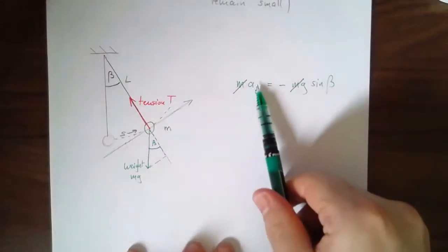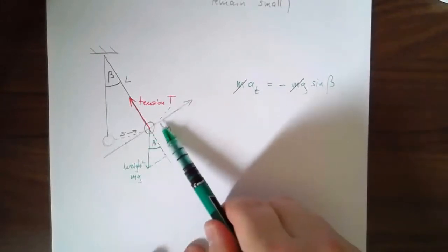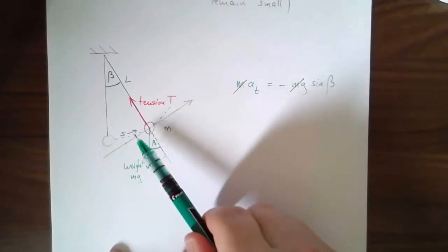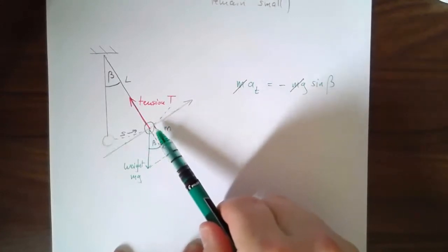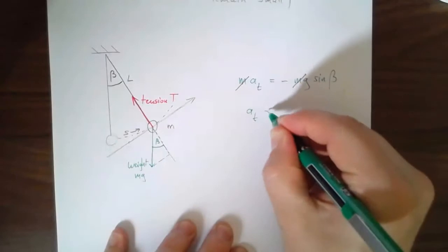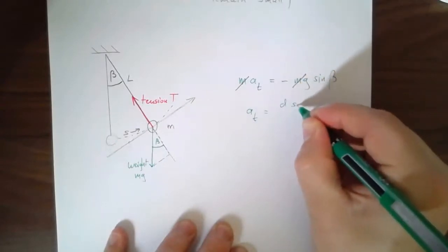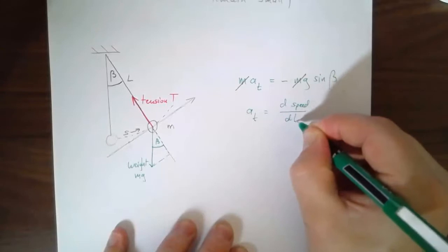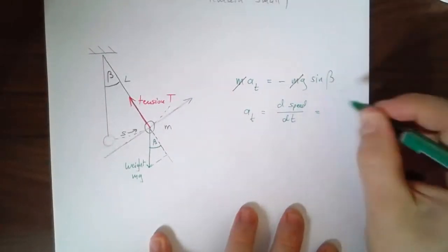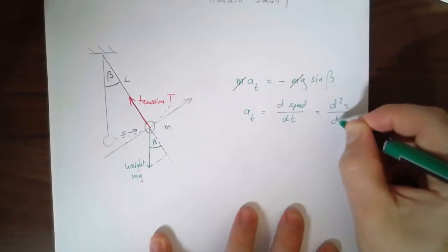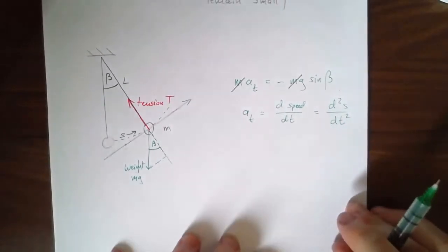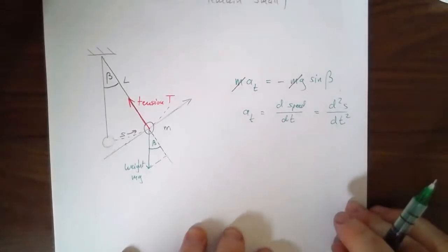So what is a? The tangential acceleration, that is just the rate of change of the speed of the mass, which in turn is just the rate of change of s. So I have at equals d divided as d speed dt. The speed is ds dt, which is going to be d2s divided by dt squared. Not divided, you know what I mean. The second derivative of s.